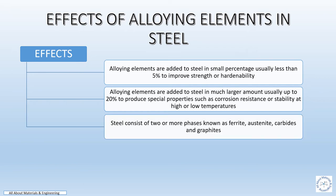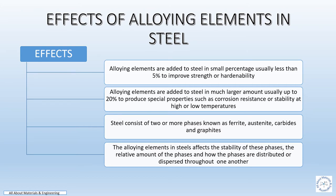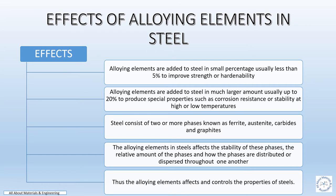Steel consists of two or more phases known as ferrite, austenite, carbide, and graphite. The alloying elements in steel affect the stability of these phases, the relative amount of the phases, and how the phases are distributed or dispersed throughout one another. Thus, the alloying elements affect and control the properties of steel.